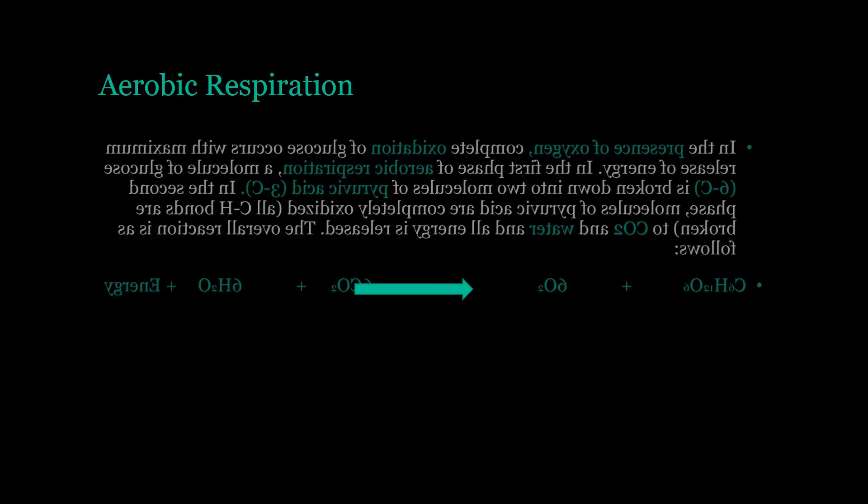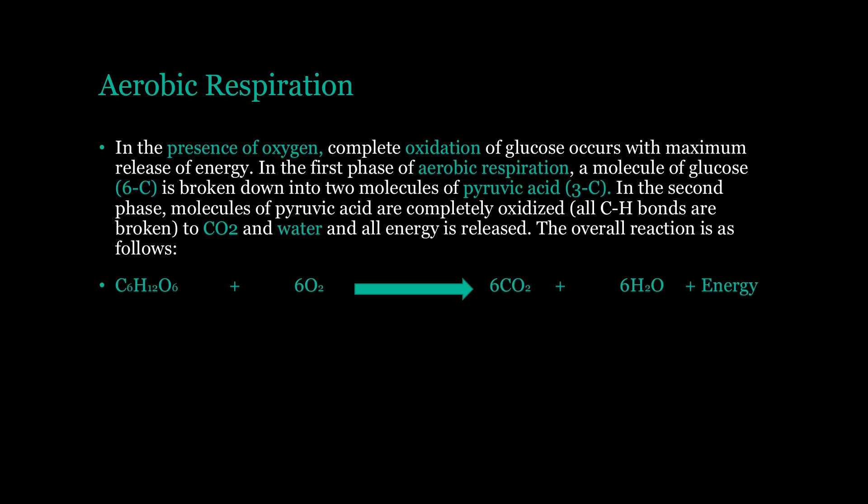In the presence of oxygen, complete oxidation of glucose occurs with maximum release of energy. In aerobic respiration, the first phase is that a molecule of glucose — 6 carbons — is broken down into two molecules of pyruvic acid. A glucose molecule contains 6 carbons. When broken down, they make pyruvic acid — meaning two molecules of 3 carbons each.